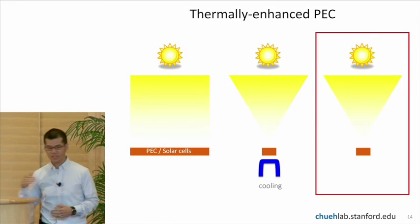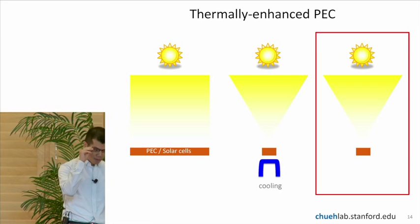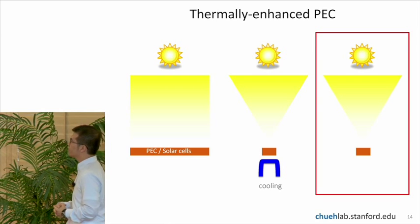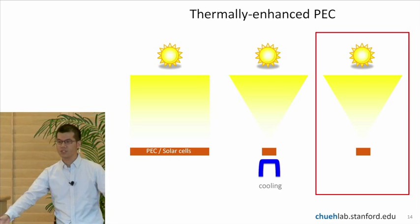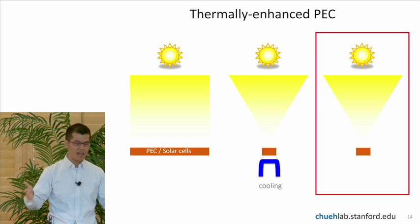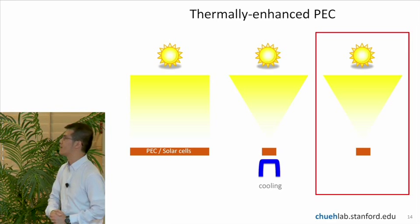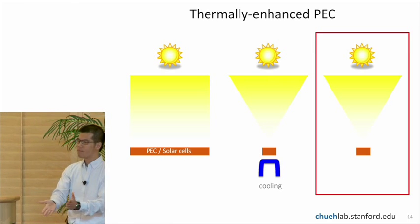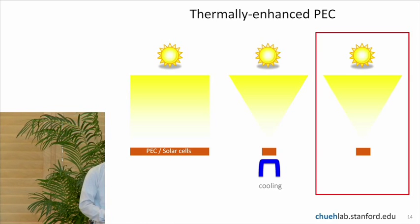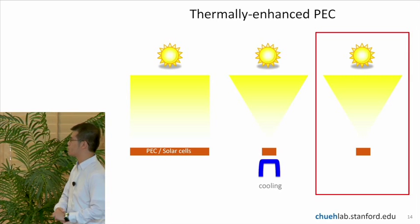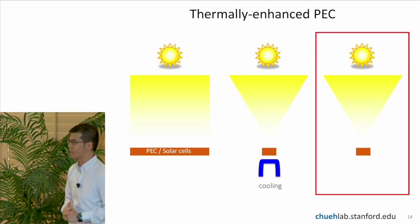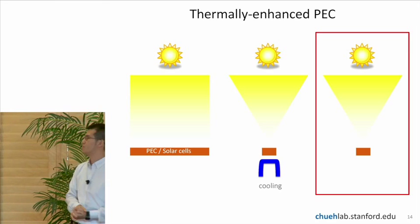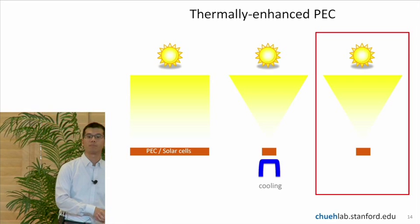So if I were to summarize the results so far, the concept of a thermally enhanced photoelectrochemical cell is appealing to us because of the following. On the left, you have the standard case of non-concentrated light hitting on a photoelectrochemical cell or solar cell. So this is the baseline case. One possibility in the second case is you can concentrate the light. But in the case of solar cell, you usually have to cool the solar cell because the power output of the solar cell decreases. So you have to have active cooling. This has been a challenge with the field of concentrated photovoltaics because the expenses associated with cooling and system complexity.